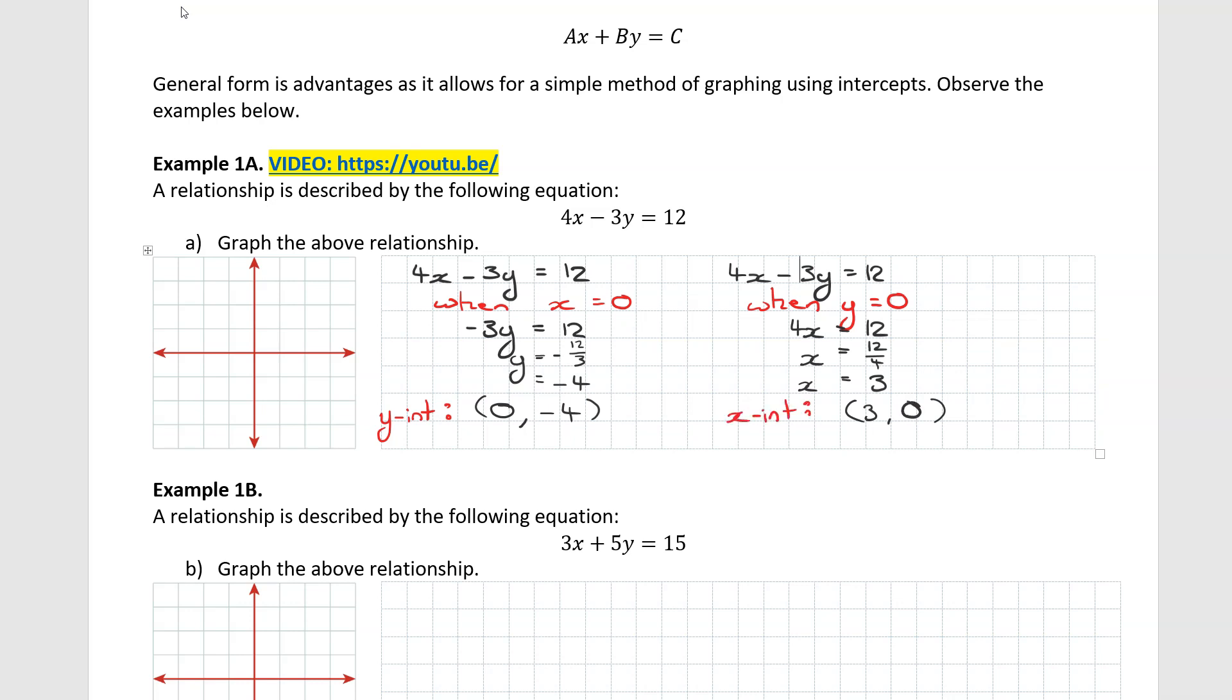Now that we have two points, all we need to do is graph on our Cartesian plane on the left here. So I'm just going to add my y plus x plus, so we know the positive directions of x and y. Then I'm going to mark the points on the axis. So the y intercept is at 0, negative 4. So 1, 2, 3, 4 down here, 0, minus 4. And then 3 and 0, that's our x intercept, so across 3.